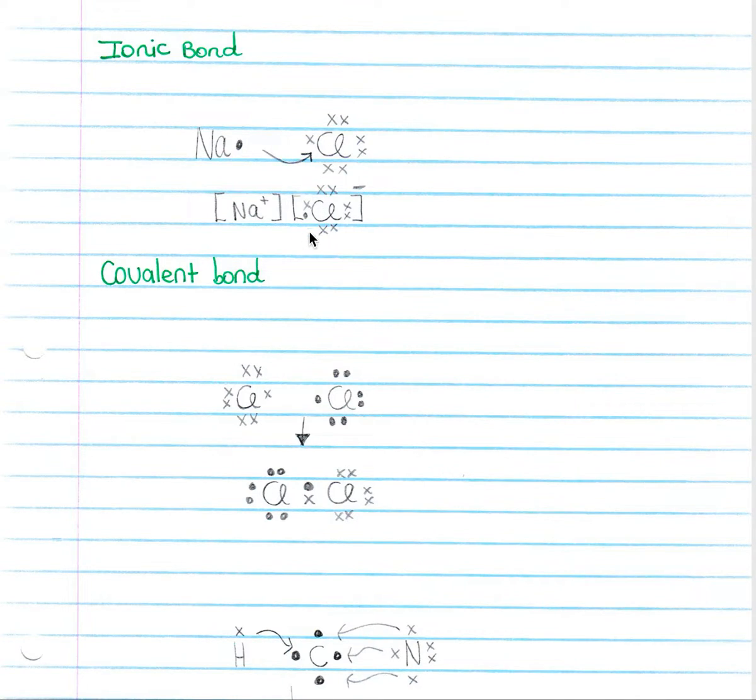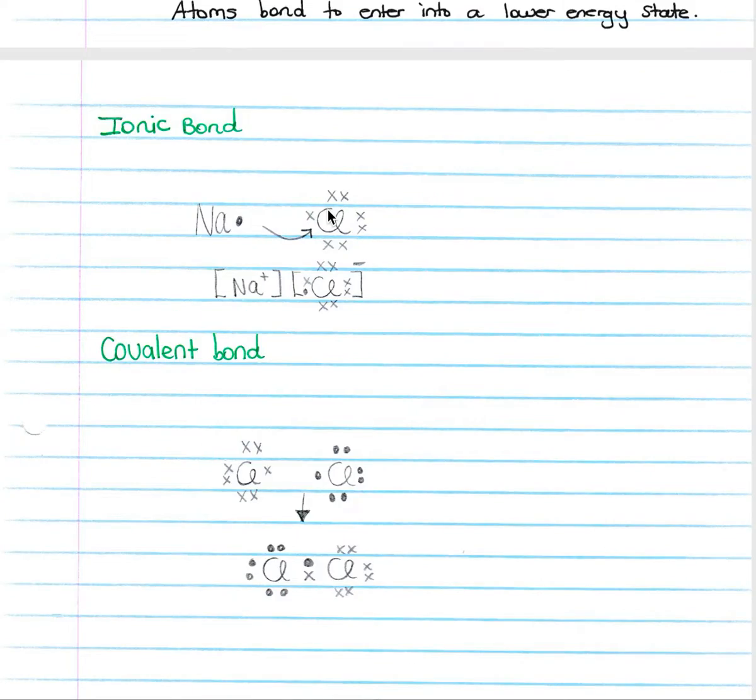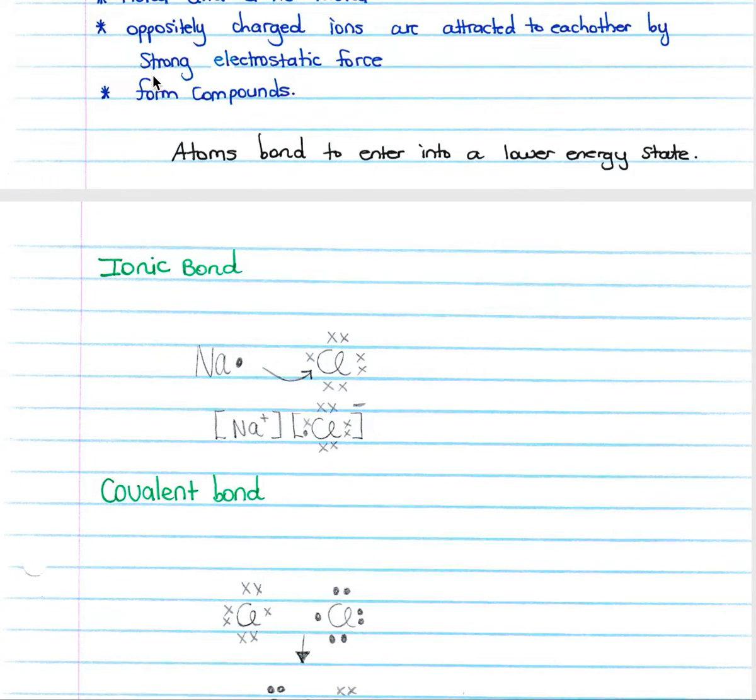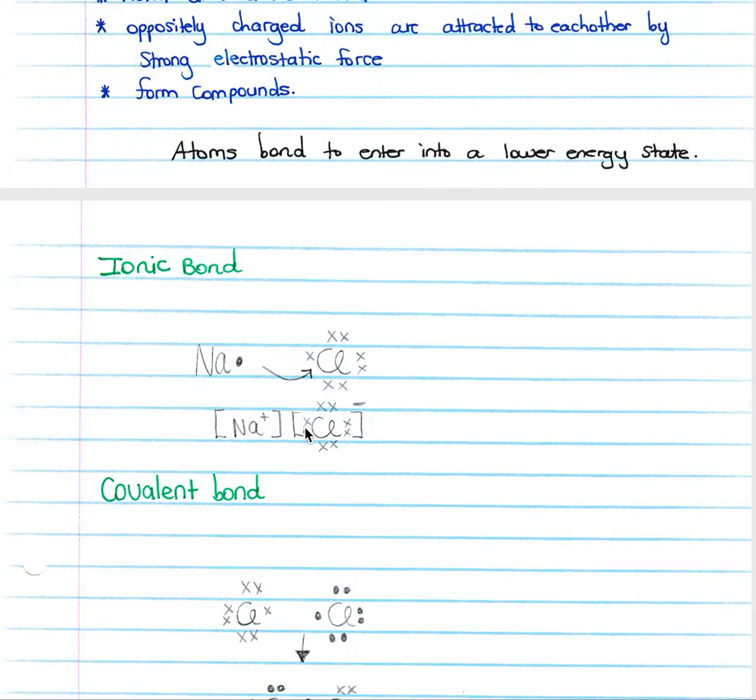The one electron on your sodium will move to your chlorine, giving it eight valence electrons and a one minus charge, and your Na will have a one plus charge. Therefore, there will be an electrostatic force between your Na and your Cl and you will form NaCl. You must not forget that this is a compound—you will form a compound of NaCl, which is sodium chloride. Remember your oppositely charged ions: Na is now positively charged by one plus and Cl is now negatively charged by one minus because we have an extra electron here and a deficiency of one electron here. There's a strong electrostatic force between the two that causes a bond.